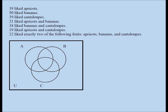Now, whenever you are drawing a three-set Venn diagram, a three-set Venn diagram splits your entire universe into eight disjoint regions representing eight non-overlapping areas. And we need to find a number for each of the eight non-overlapping areas.